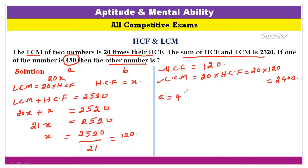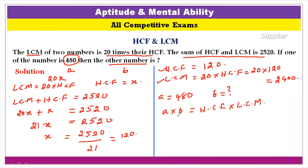Now we know HCF = 120 and LCM = 2400. Since one number A = 480, we can use the property of HCF and LCM: HCF × LCM = A × B. So we substitute these values to find the other number B.